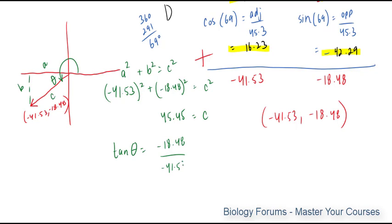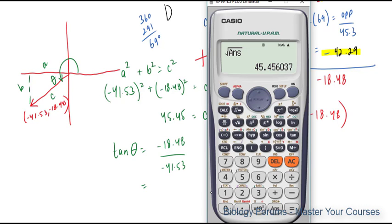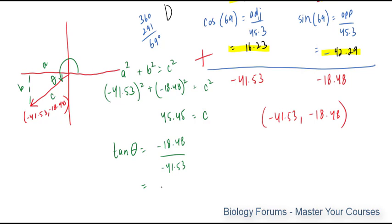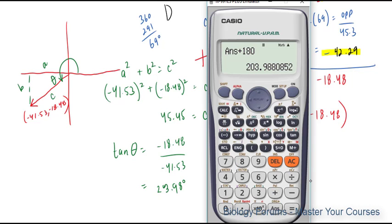Which is negative 41.53. And the answer, negative 18.48, divided by negative 41.53. And we will use the inverse tangent now, which is on our calculator. And we get 23.98 degrees. Now, that does not mean your resultant vector has 23.98 degrees. That's the reference from here to here. So what we'll have to do is we'll have to add that to 180 degrees to find our resultant, which will be plus 180, is equal to 203.98.